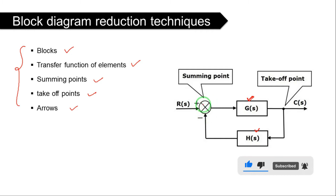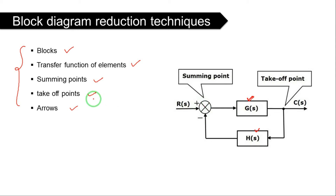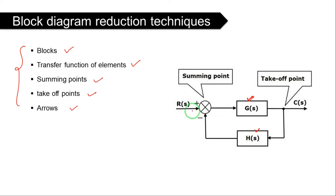Summing points are represented by a circle. This circle has some inputs — one, two, three, four — and acts as a comparison or summing point where two or three inputs are added or subtracted to give a resultant output. Takeoff points are like a junction or node, where a single line branches out and connects to various elements.